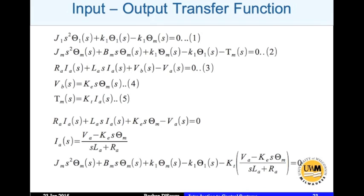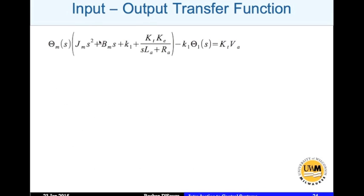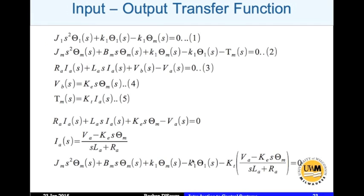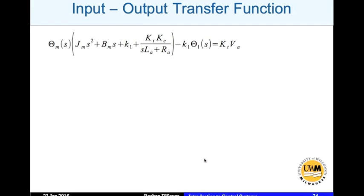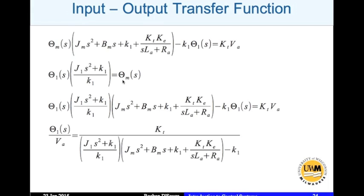The next step is to eliminate theta_m. Using equation 1, we write theta_m in terms of theta_1. We substitute for theta_m throughout and then, by algebra, obtain the final transfer function between theta_1 and VA. The result is somewhat complicated, but most of the work is linear algebra. That is the end of this lecture.